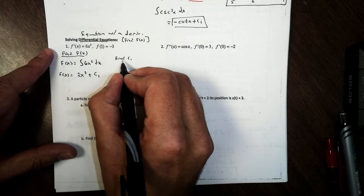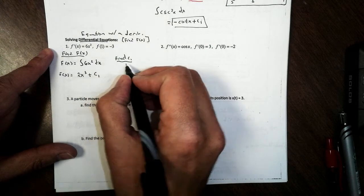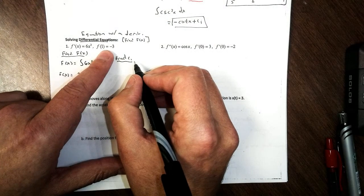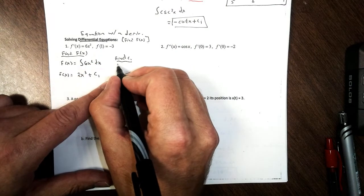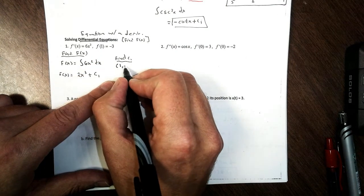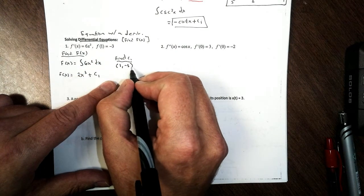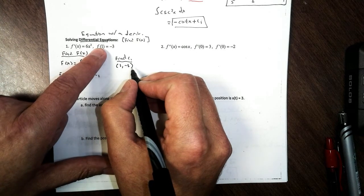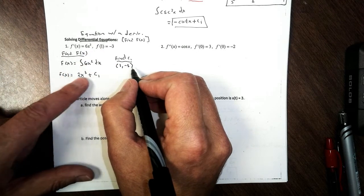To find the constant, you need an initial condition, and that's what they tell us here. They tell us at x equals 1, the y value is at negative 3. They're telling me the value of my function at 1 is negative 3. Well, here's my function, and I can just plug that in.